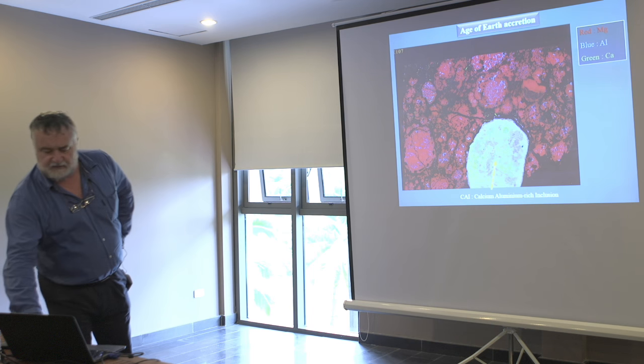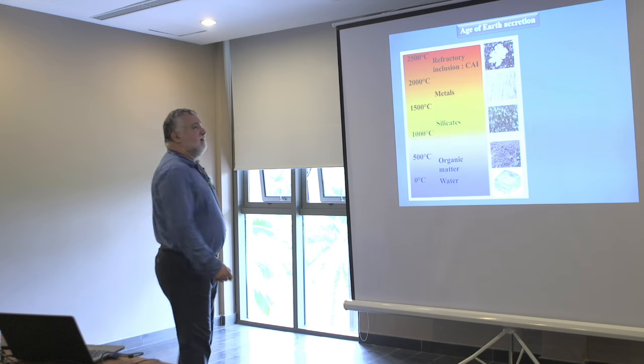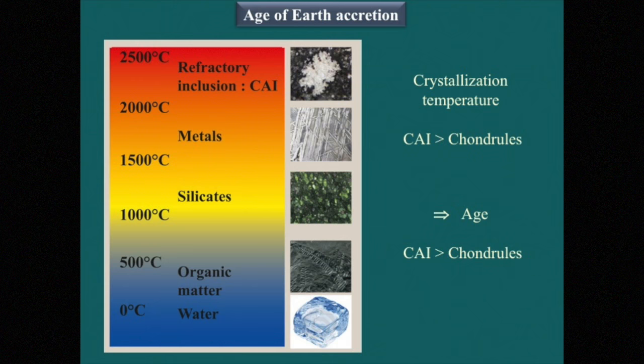These inclusions are very interesting because they are very refractory parts of the meteorite. If we look at the temperature scale, this refractory inclusion crystallized and condensed between 2000 and 2500 degrees, while metals crystallized at lower temperature and silicates at even lower temperature. So they are among the first materials that crystallized in the solar system.